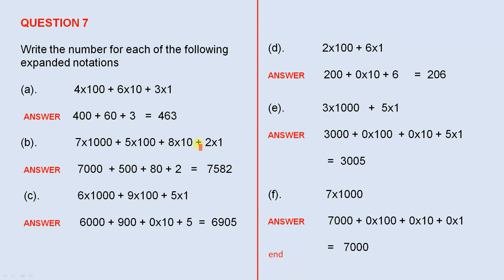The next one: 7 times 1000, plus 5 times 100, plus 8 times 10, plus 2 times 1. 7 times 1000 is 7000. 5 times 100 is 500. 8 times 10 is 80. And 2 times 1 is 2. That gives 7582.